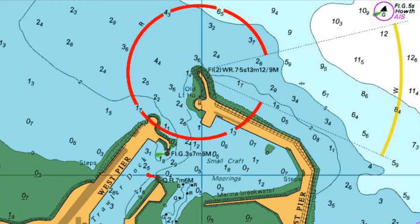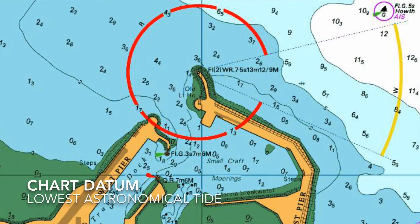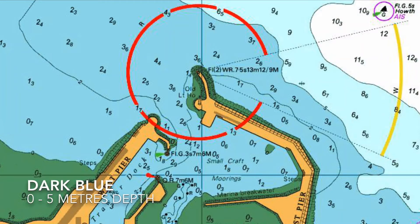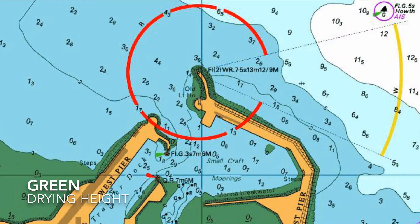Any of the depths marked on our chart are below what is called chart datum, chart datum being the lowest astronomical tide. If we were to experience this lowest of low tides, any of the depths in the white area are over 10 meters deep, any in the light blue area are between 5 and 10 meters deep, and any in the darker blue area are between 0 and 5 meters deep. The green area is a little bit different — if we were to experience this lowest of low tides, the numbers marked in the green area are actually heights above low water. These heights are called drying heights and they're signified by the line underneath the number. Finally, the yellow color signifies dry land or land above high water.